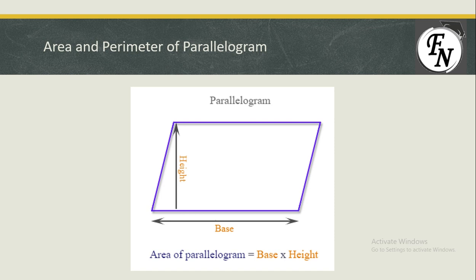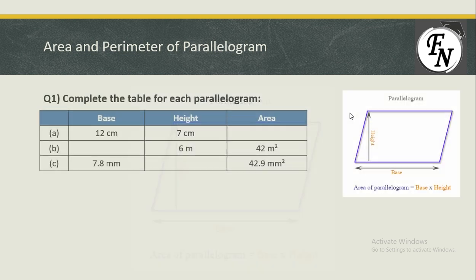Let's look at a question. We have been given a table where in the first part we are given the base and height and need to find the area. In the second part we are given the area and height and need to calculate the base. In the third part we have the base and area but the height is missing. We need to apply the formula for the area of a parallelogram to find these three missing values.